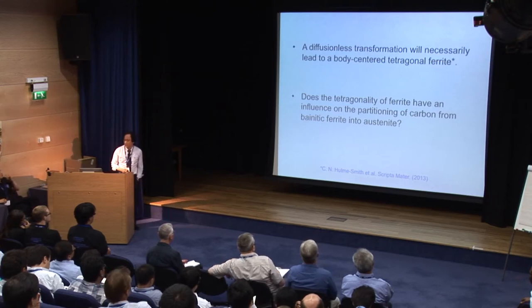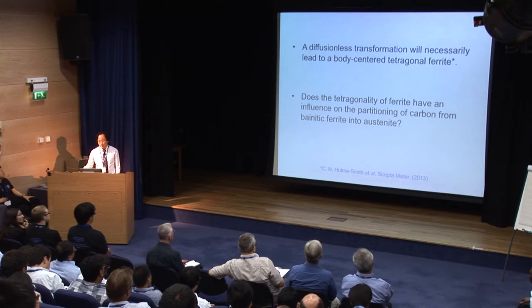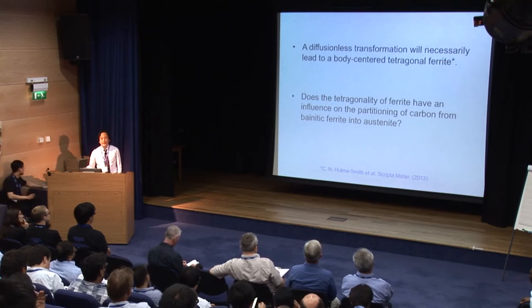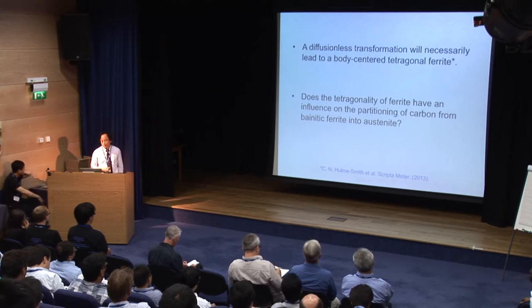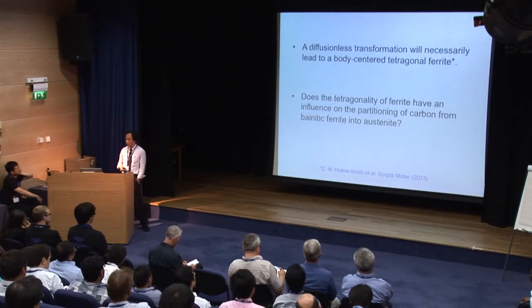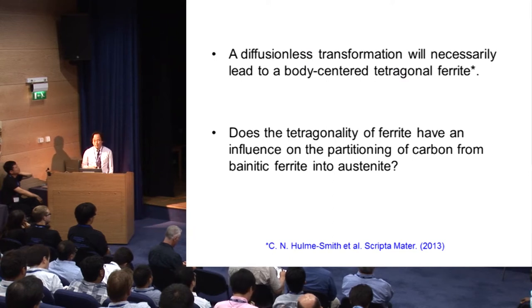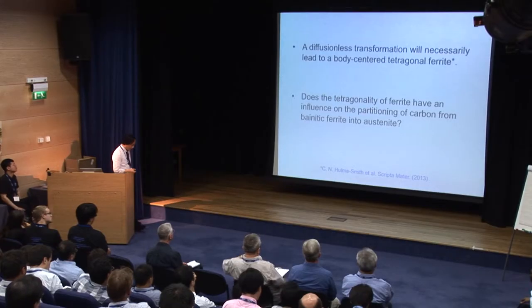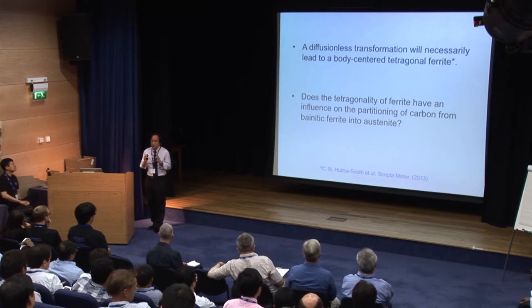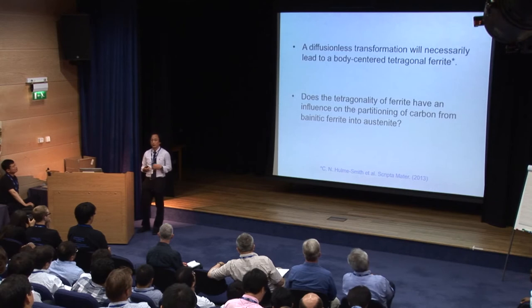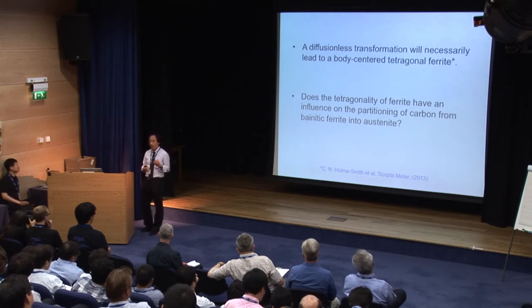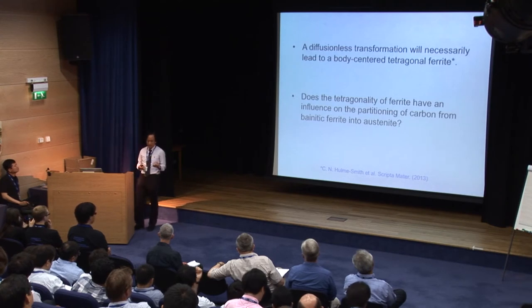It is clear that a diffusionless transformation will necessarily lead to body-centered tetragonal ferrite. Recently, Smith and co-workers experimentally confirmed tetragonality in bainitic ferrite in the presence of carbon. Then, how does the tetragonality of ferrite influence the partitioning of carbon from bainitic ferrite into austenite? As one can guess, any structural change in ferrite will change the size of the interstitial site, and that change will alter the dissolution energy of carbon into ferrite, which also affects solubility.